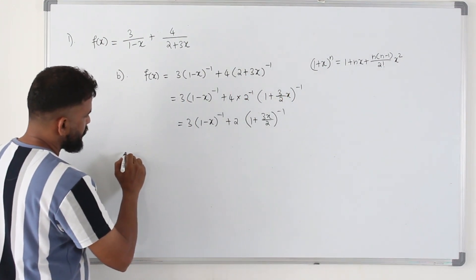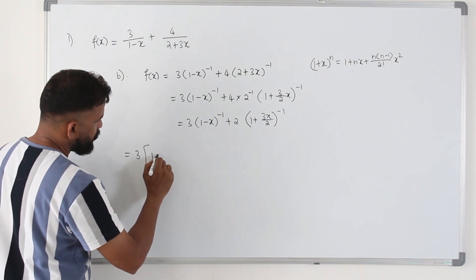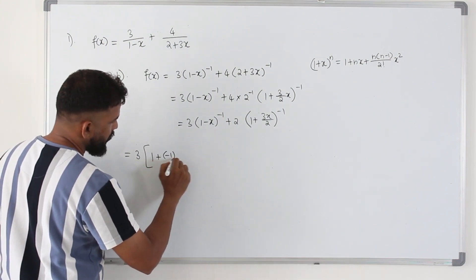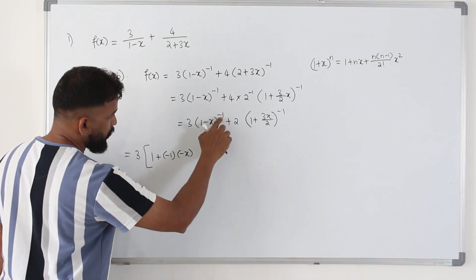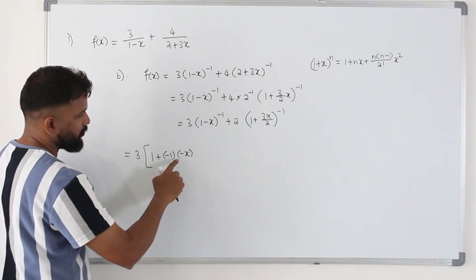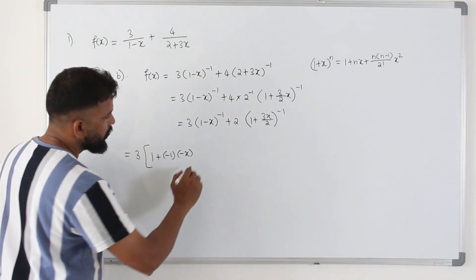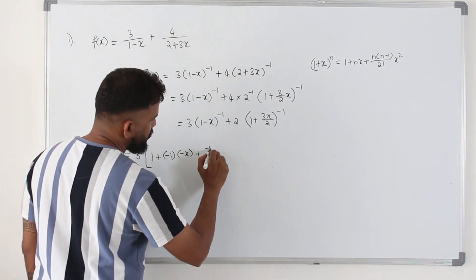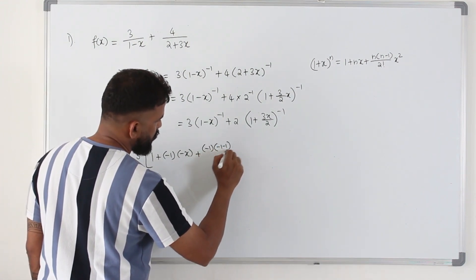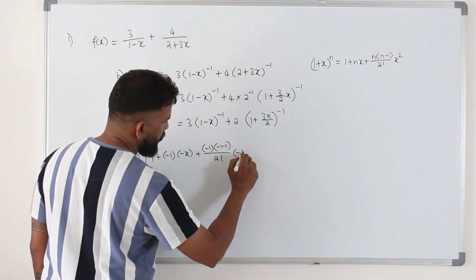So I'm going to write this as 3 times 1 plus nx, where n is the power and x is the second term. In this case minus x, plus n times n minus 1 over 2 factorial x square.